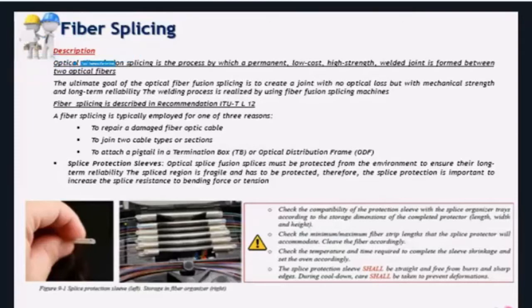Why do we use splicing? To repair a damaged fiber cable, to join to fiber strands, to also connect termination boxes or any other optical passive component to cables by means of pigtails that have to be spliced.